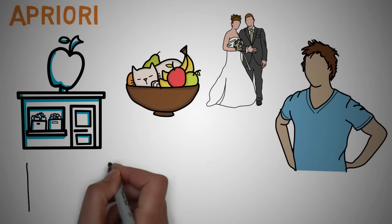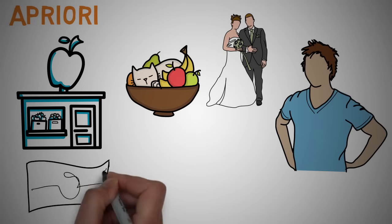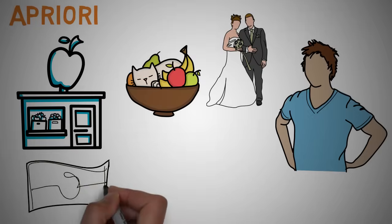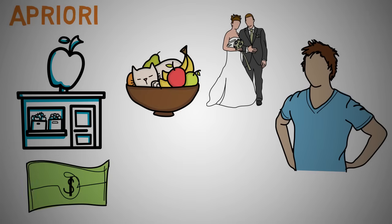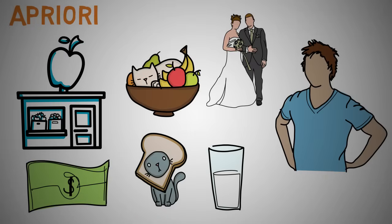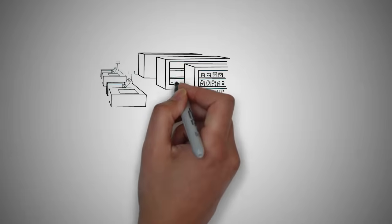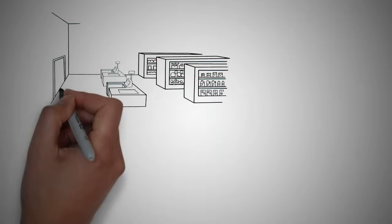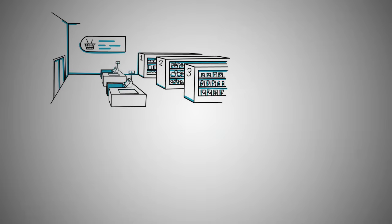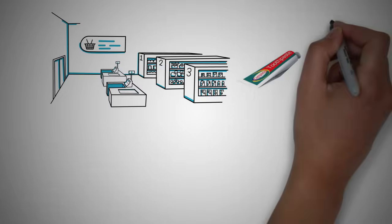Understanding these buying patterns can help to increase sales in several ways, such that if there is a pair of items that are bought frequently together, like bread and milk for example. When you go to a store, would you not want the aisles to be in order in such a manner that reduces your efforts to buy things?